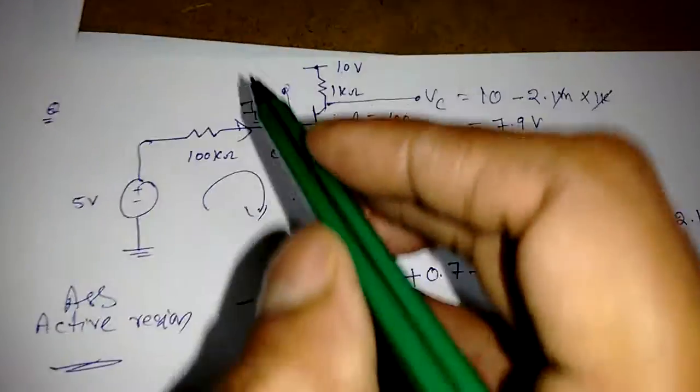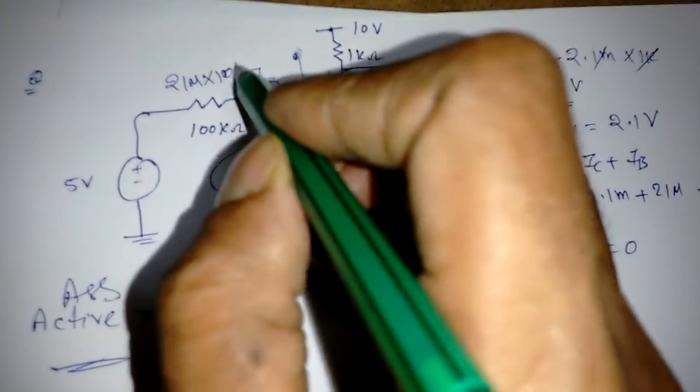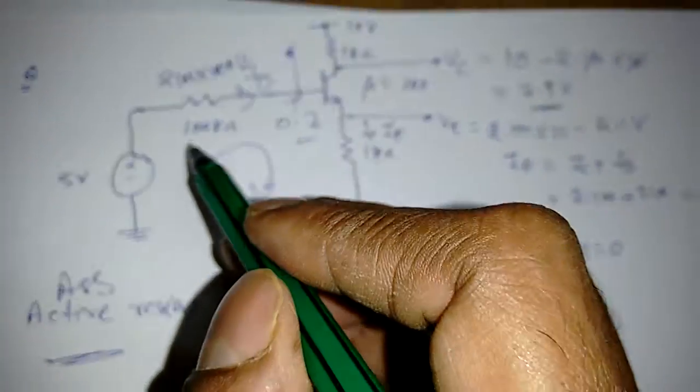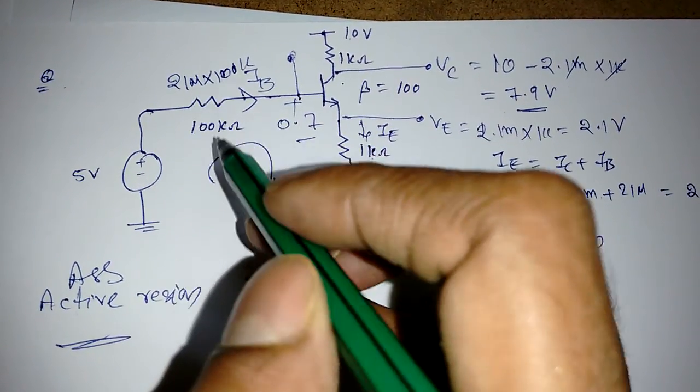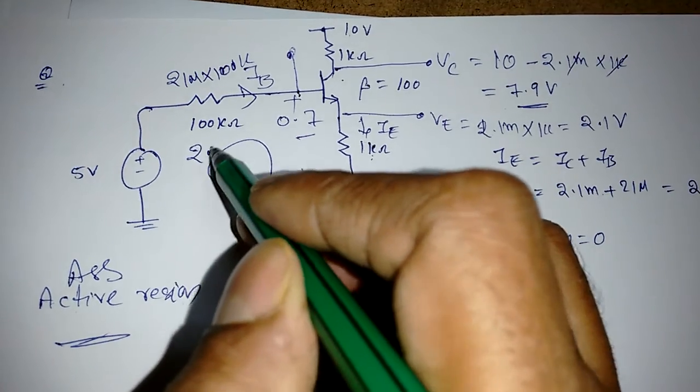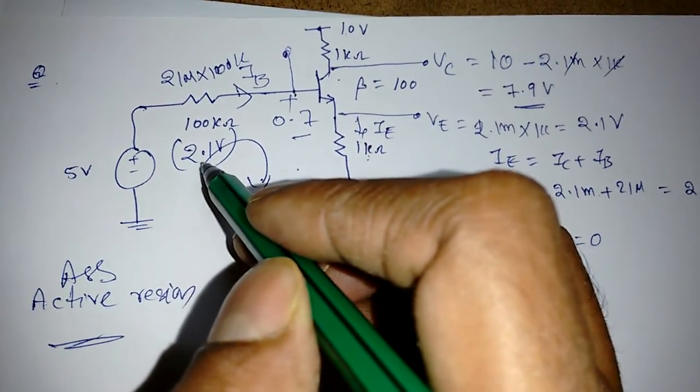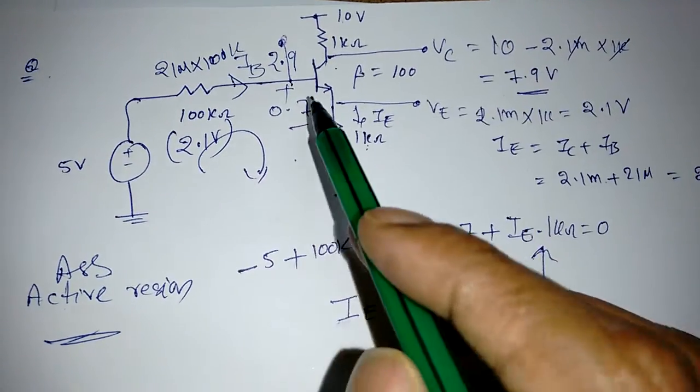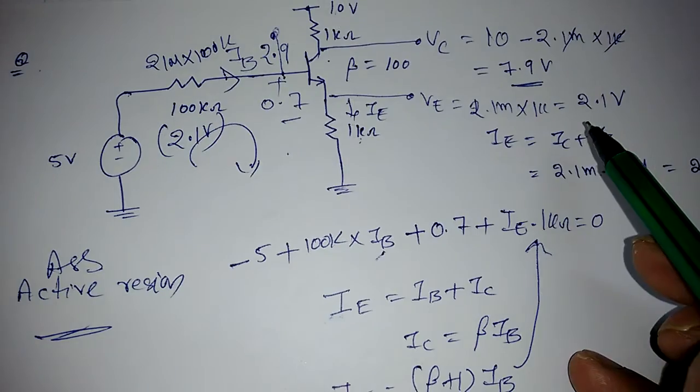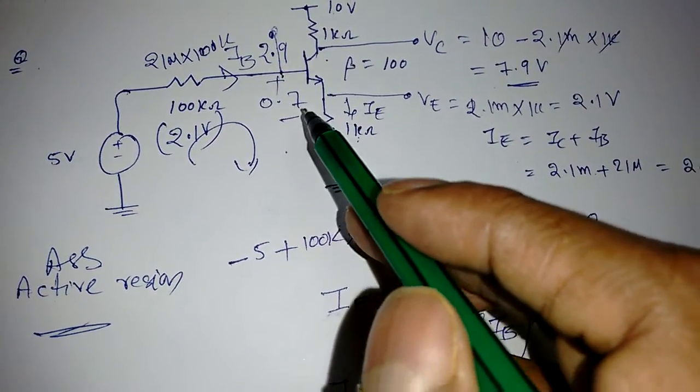What about VB? I know IB is 21 µA, so the drop is 21 µA × 100kΩ = 2.1 volts. The remaining drop is 2.9 volts, so 2.9 - 2.1 = approximately 0.7 or 0.8 volts.